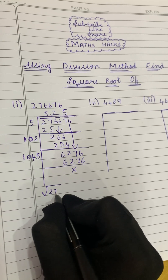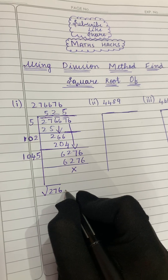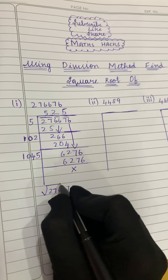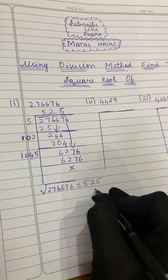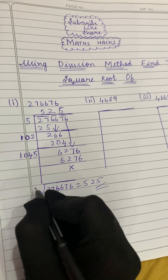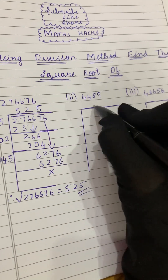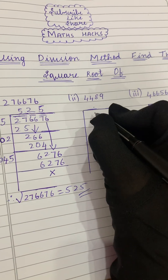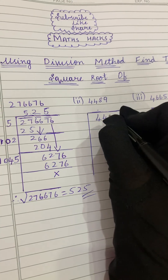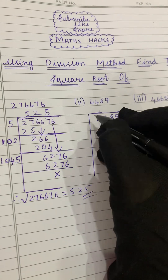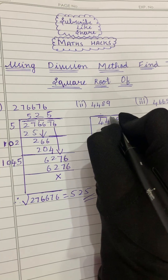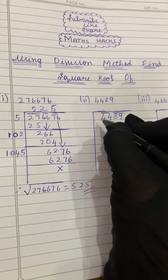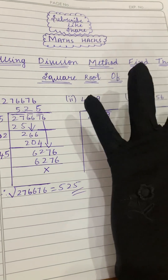Now let's solve the second question: 4489. The first step is pairing from the right side. We get two pairs: 44 and 89.